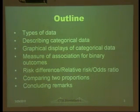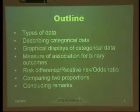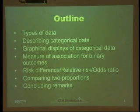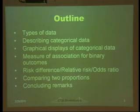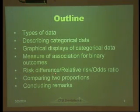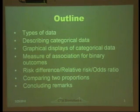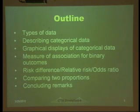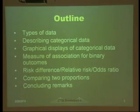This is the outline. First, I'll explain the types of data and then describe categorical data. We will investigate how to express categorical data graphically, and then we will investigate three measures of association for binary outcomes. Those are risk difference, relative risk, and odds ratio. That'll be the main part of this talk. At the end, we will compare two proportions with small sample sizes using Fisher's exact test, and then we will have a brief conclusion.